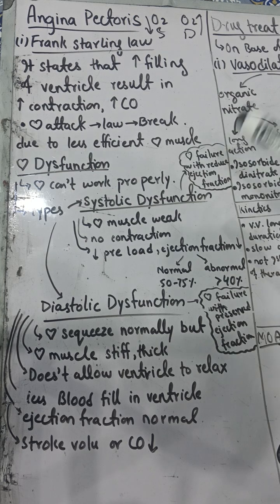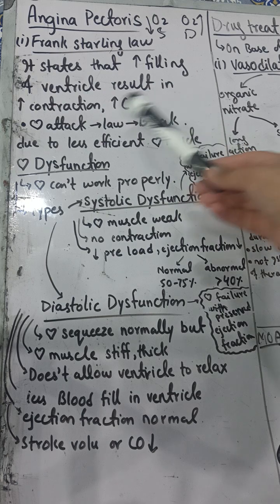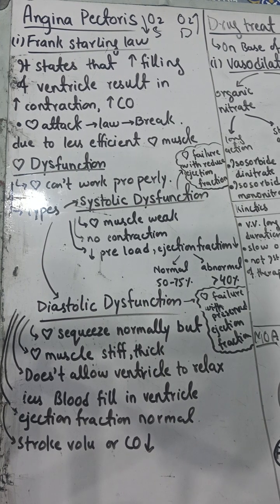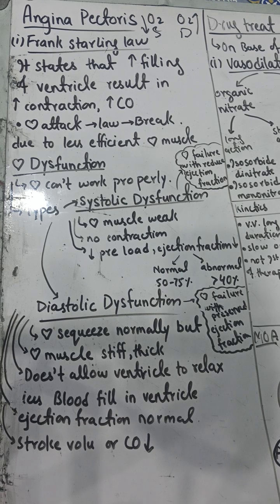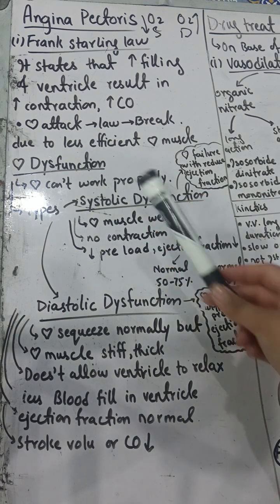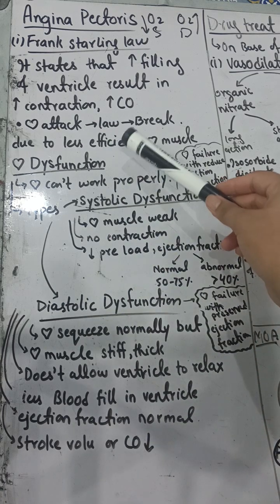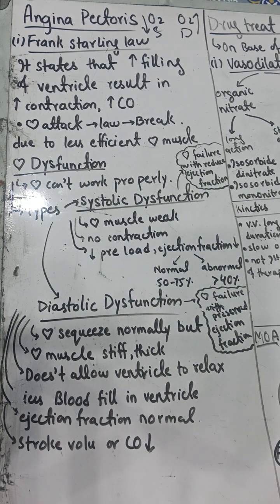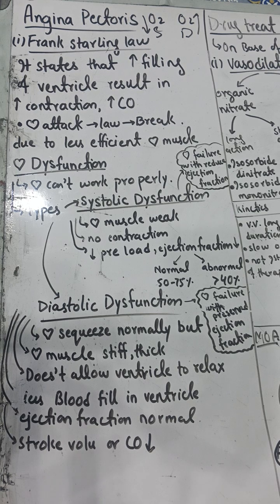In this lecture we will discuss the Frank-Starling law. It states that an increase in the filling of the ventricle results in more contraction or more cardiac output. However, in a patient who already has a heart attack or is passing through a case of angina pectoris, this law breaks — the cardiac muscles become less sufficient, they cannot properly fill the ventricles or properly contract. This question can be asked in a viva, so keep that concept in mind.